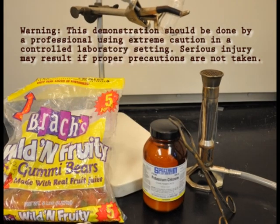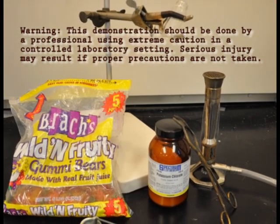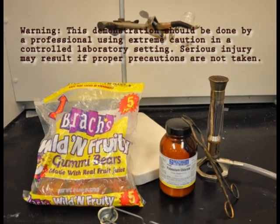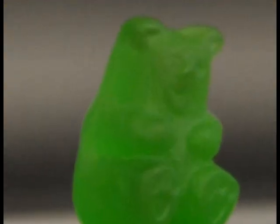The materials needed for the Dancing Gummy Bear include potassium or sodium chlorate, a Bunsen burner, a Pyrex glass container, tongs, and of course one unfortunate gummy bear.